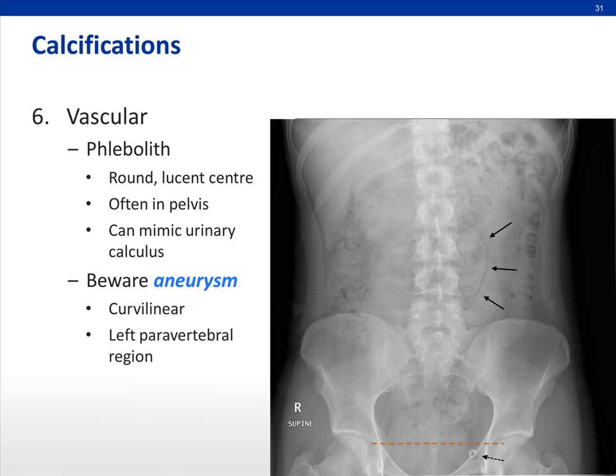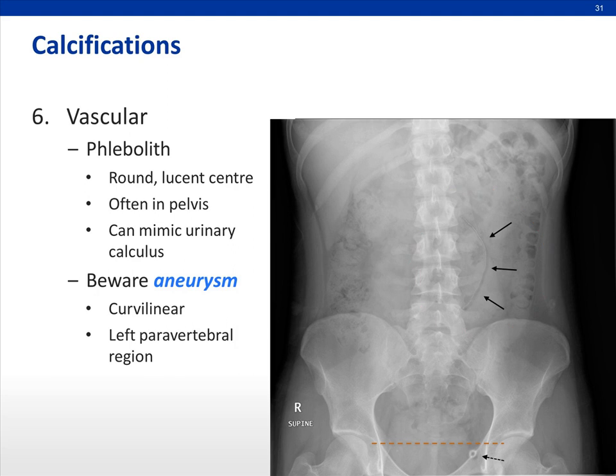Lastly, we do not want to miss an aneurysm. Always look to the left of the vertebral body for curvilinear calcifications, as shown here.